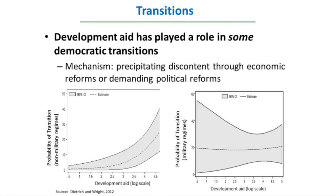Turning to the findings: regarding transitions, development aid has played a role in some democratic transitions on the continent. From our statistical work, higher levels of development aid have been associated with a higher probability of transition from a one-party to a multi-party regime. But we've only found this in countries that had a non-military regime at the time of transition, because the cost of transition is much lower for a non-military regime — military regimes tend to have a smaller coalition and a higher cost to transitioning.